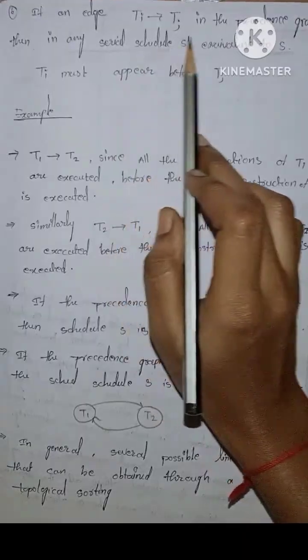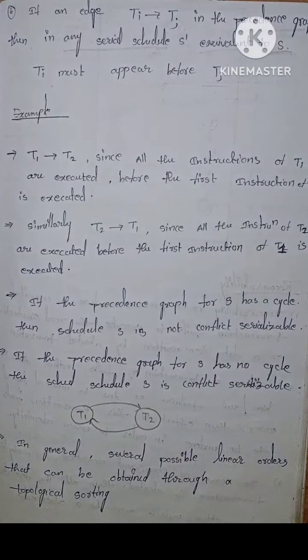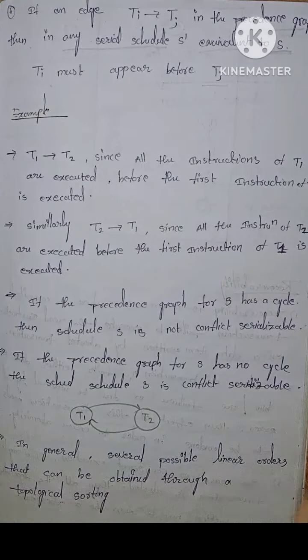Then any serial schedule S prime is equivalent to schedule S. Ti must appear before Tj. The example for testing for serializability.